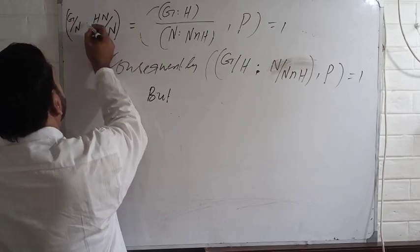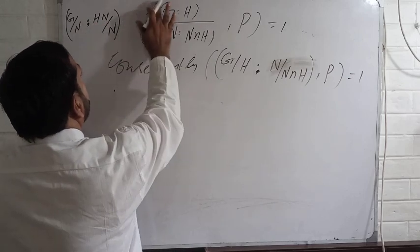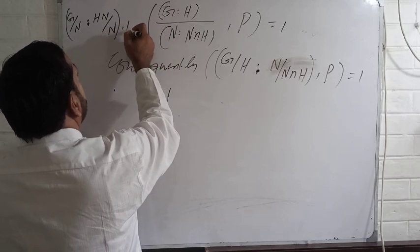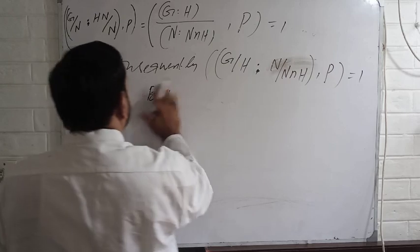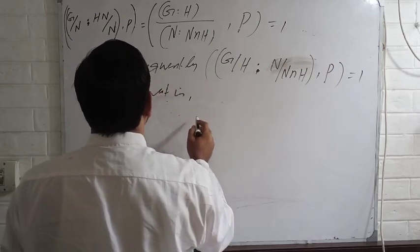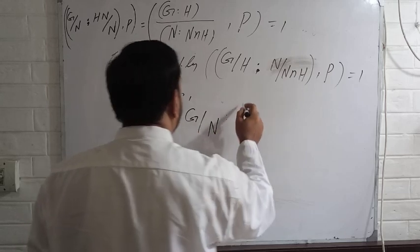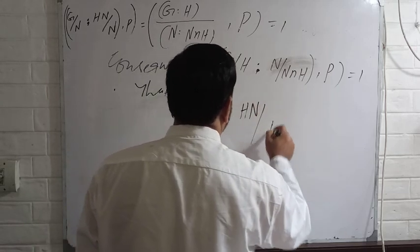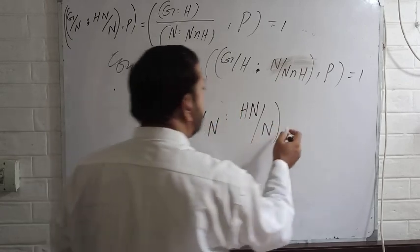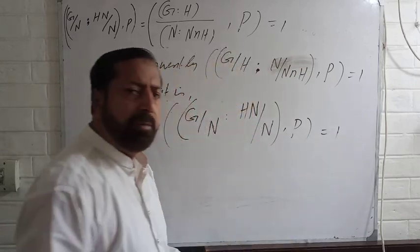Yes, this is the index. With P, you can write like this: the index of HN by N in G by N, with P both are relatively prime.